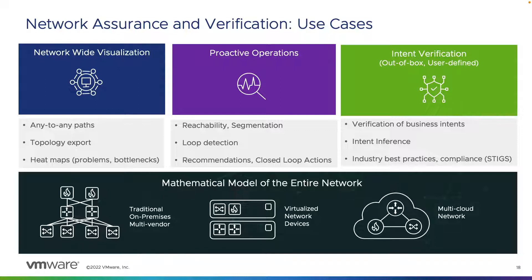Every business has different intents in regards to their line of business and different levels of compliance that they must meet. This allows us to define our business policies in the form of intents to check against the infrastructure to see if we're in compliance or if we're failing. Network Assurance and Verification uses a mathematical model for the entire network, running analysis across the configuration for the virtual and physical infrastructure and building a digital twin of the infrastructure to run intents against. Analysis is continuously run over time, parsing out changes and alerting proactively of anything that could cause a network impact.